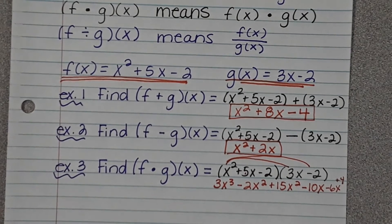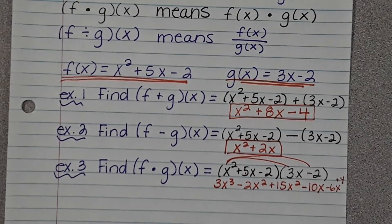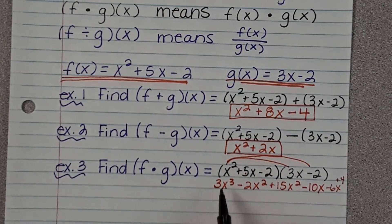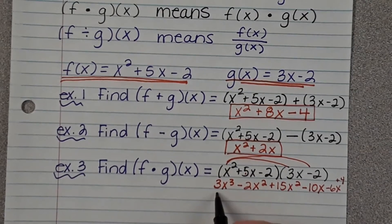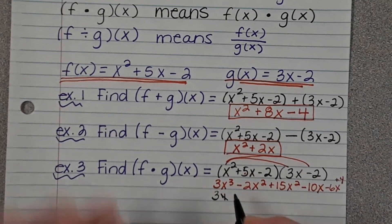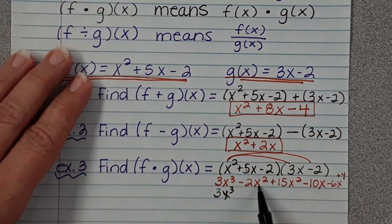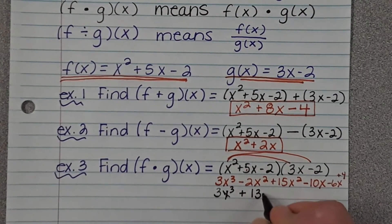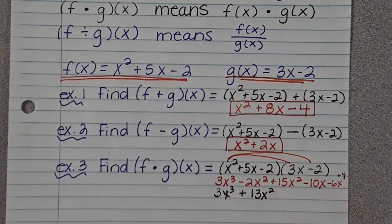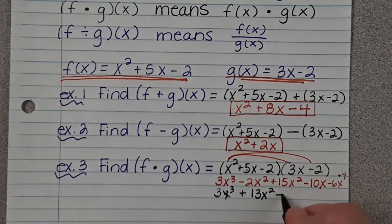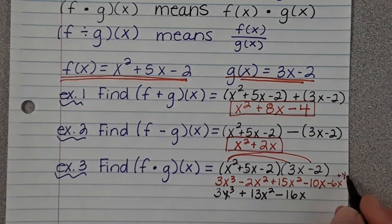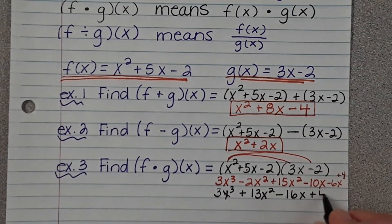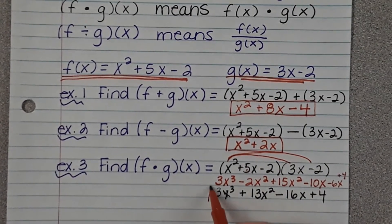So again, I added the two, I subtracted the two, now I multiplied the two. And because after I multiply them, you still have to combine like terms. There is no like term with 3x³. So I'm just going to write 3x³. Negative 2x² plus 15x² is positive 13x². Negative 10x and negative 6x is negative 16x. And the only constant term is 4. So I'm going to put plus 4. And then this is my answer.